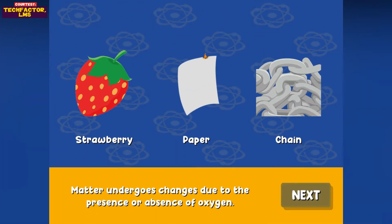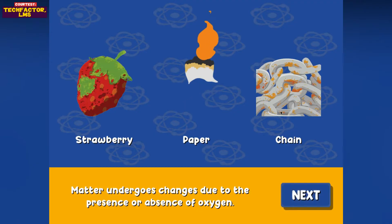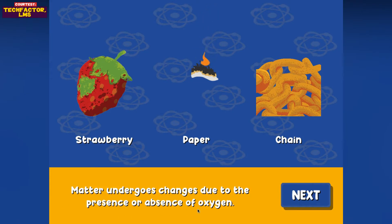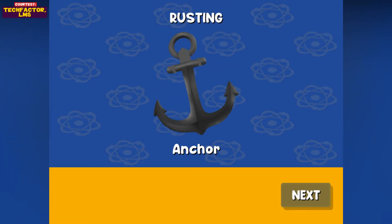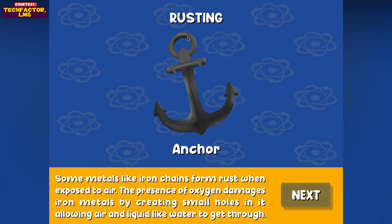Matter undergoes changes due to the presence or absence of oxygen. Some metals like iron chains form rust when exposed to air. The presence of oxygen damages iron metals by creating small holes in it, allowing air and liquid like water to get through.